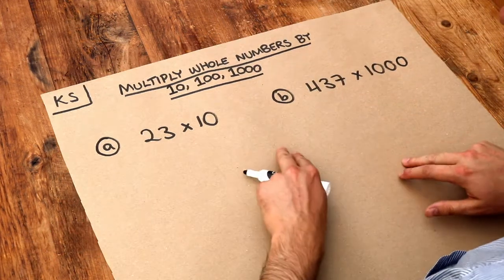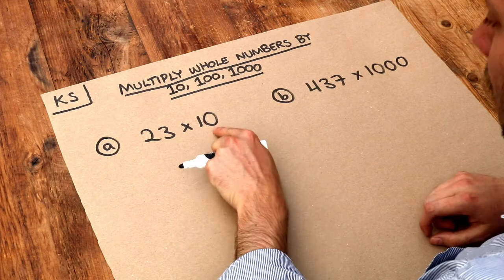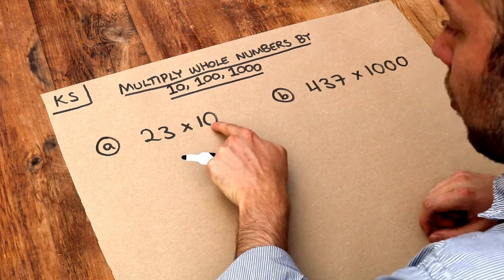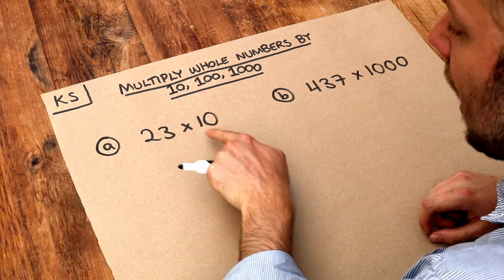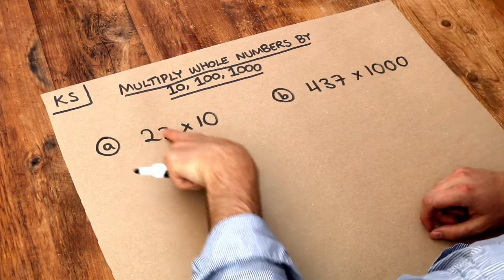And the only thing you need to know here is that when you times by 10, 1,000, etc., however many zeros are on the end of that one there is how many zeros you're going to put on the end of this number.